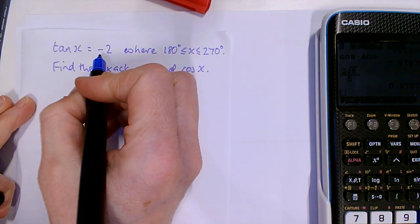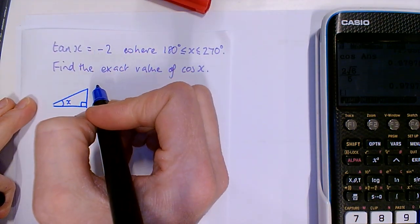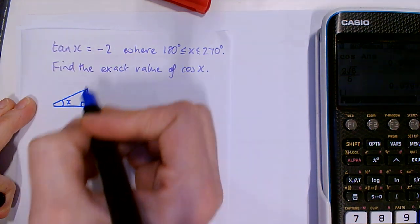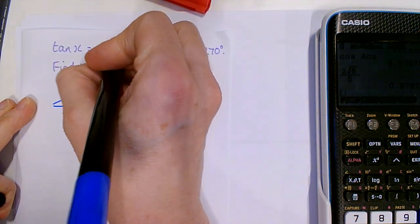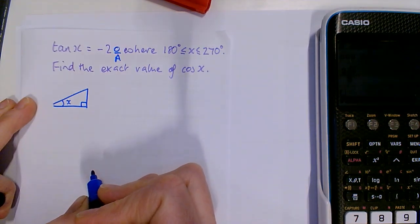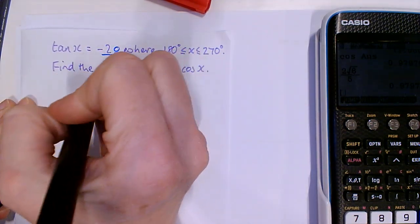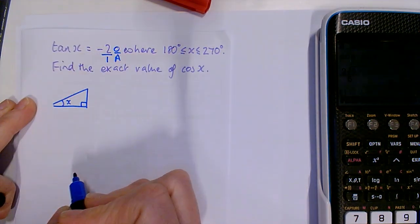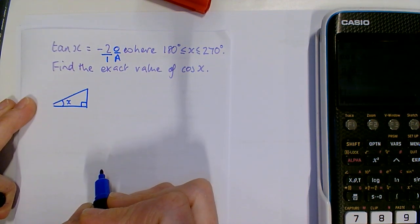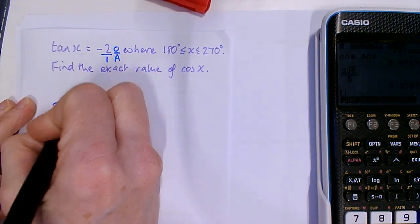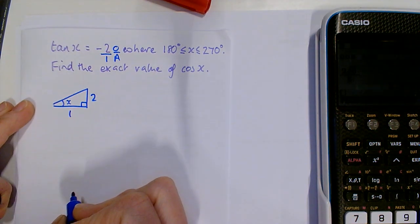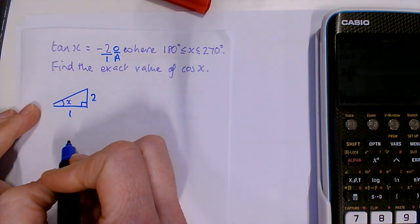And this time we're told that tan x is minus 2. But we know that tan is opposite over adjacent. So if the opposite was 2, then we'd have an adjacent of 1. Because minus 2 is the same as minus 2 over 1. So we put in 2 and 1 and we ignore the minus at the moment.